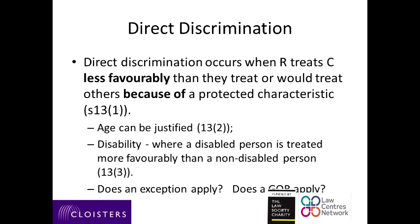However, in the case of age you are able to justify direct discrimination or less favourable treatment if the respondent can show that the treatment was in pursuit of a legitimate aim, which will have to be of a public interest nature, and secondly that the treatment was an appropriate means of achieving that aim, and finally that it was a reasonably necessary means of achieving that legitimate aim.